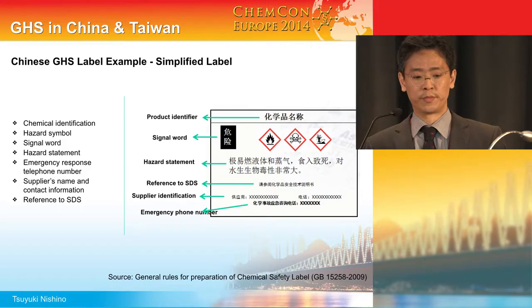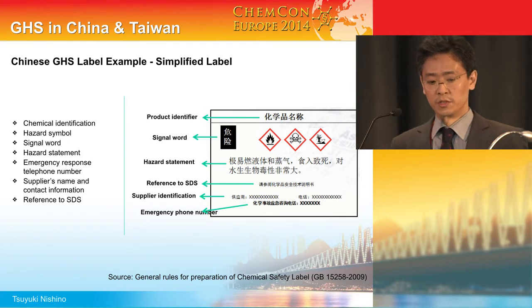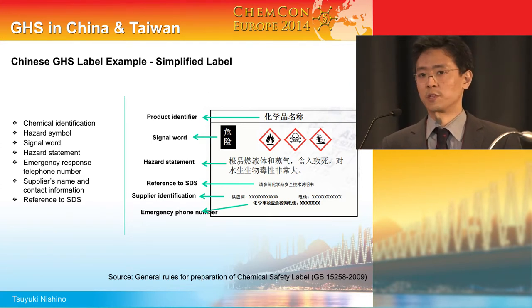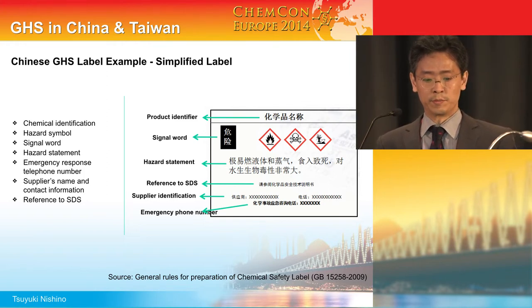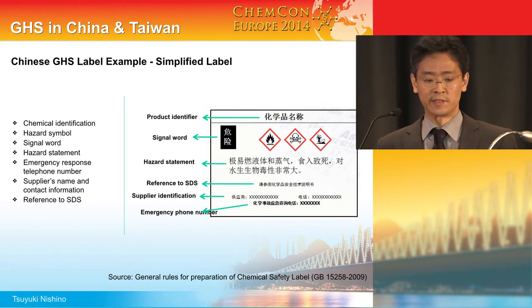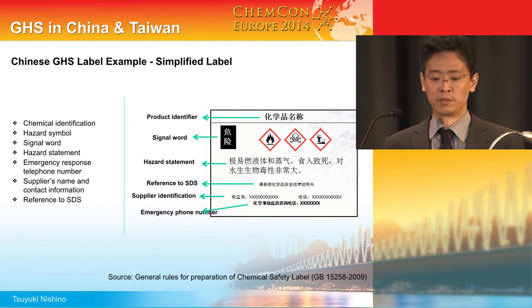For China labels, you need chemical identification, hazard symbol, signal word, hazard statement, emergency response telephone number — which must be a Chinese landline number — supplier's name and contact information, and the phrase: 'Please refer to MSDS for detailed information.'